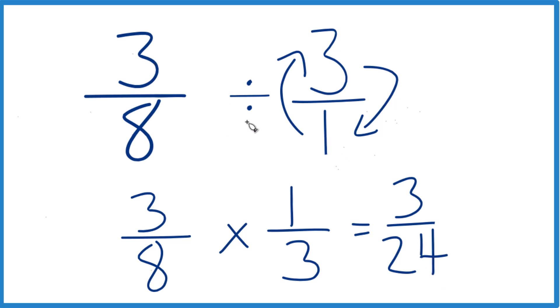So three eighths divided by three gives us three 24ths. But we can simplify this, because three goes into itself and 24 evenly.